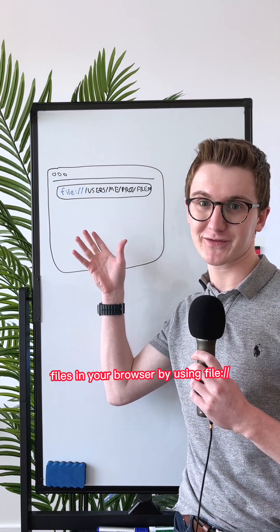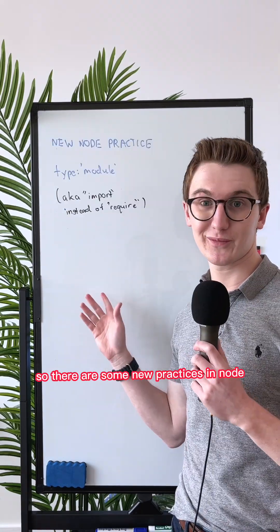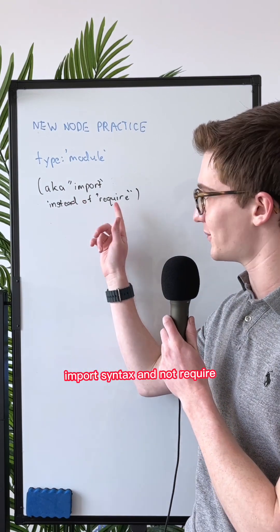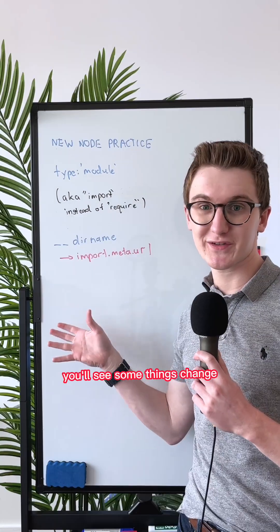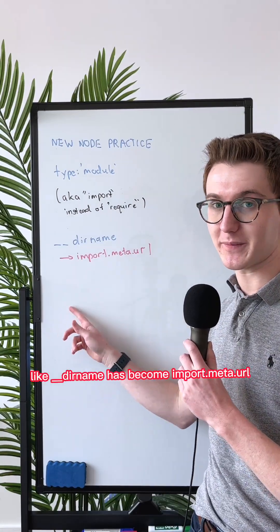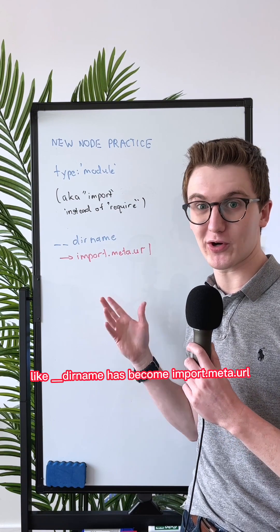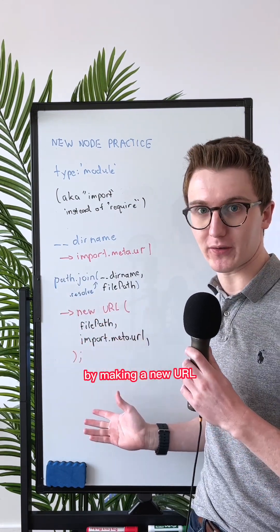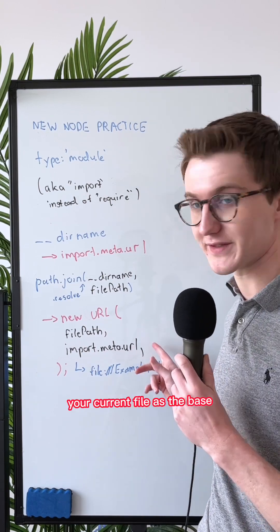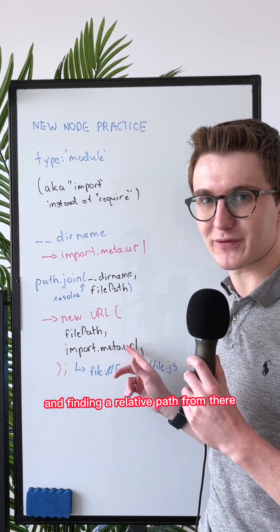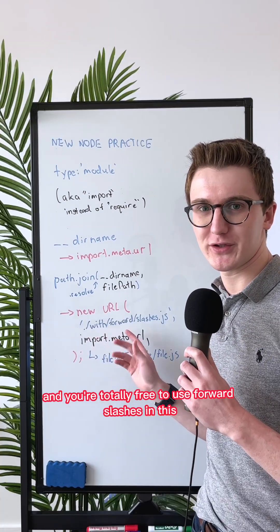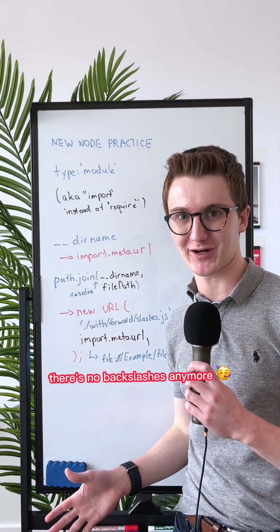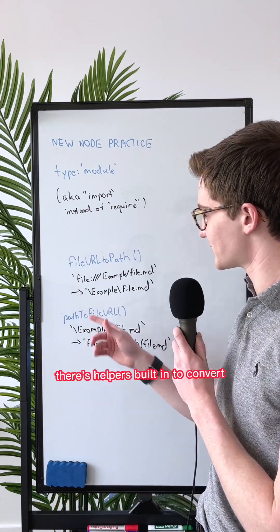It turns out it might just be URLs. You can already visit files in your browser by using the file:// prefix. There are some new practices in Node — assuming you're using import syntax and not require — you'll see things change. __dirname has become import.meta.url, and helpers like join and resolve can be replaced by making a new URL(). This example takes your current file as the base and lets you find a relative path from there. You're totally free to use forward slashes because it's a URL — no backslashes anymore.